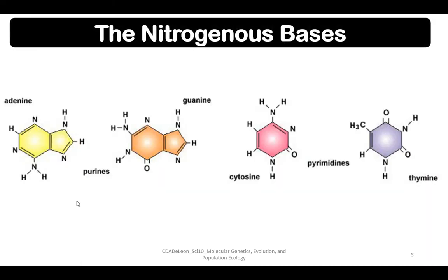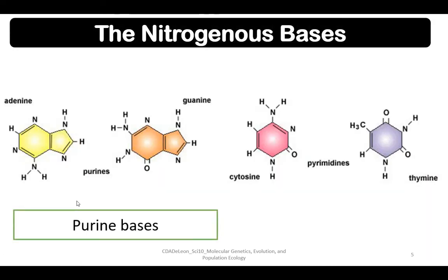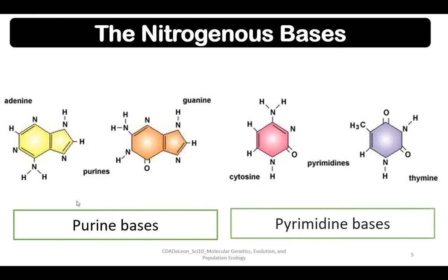In terms of nitrogenous bases, we have four. We have the purine bases and pyrimidine bases. Purine bases are composed of adenine and guanine, while pyrimidine bases are cytosine and thymine.